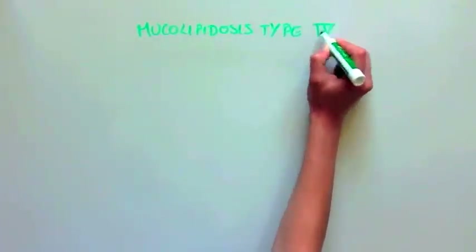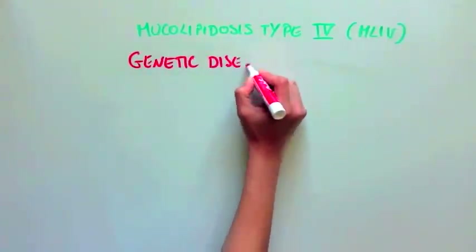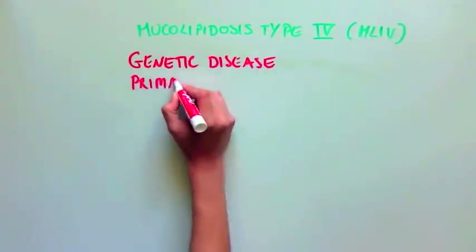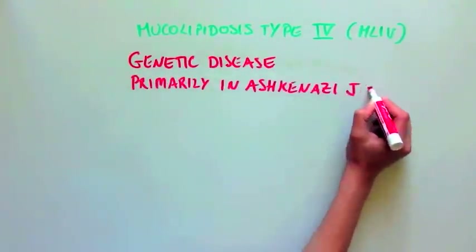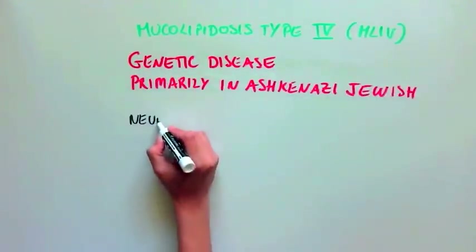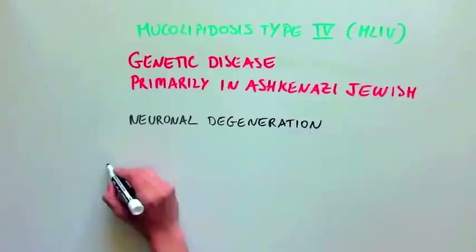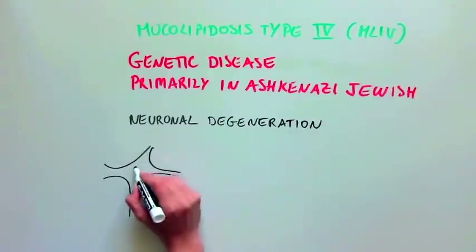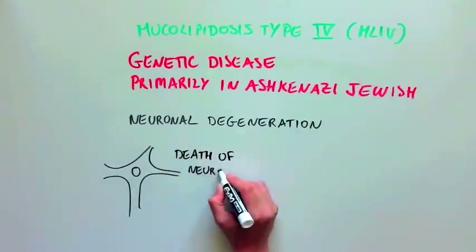Mucolipidosis type 4, or ML4, is a genetic disease that is found primarily in the Ashkenazi Jewish population. It is characterized by neuronal degeneration, meaning death of neurons, the cells that allow the brain to function.